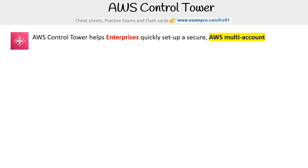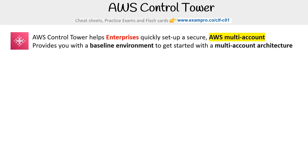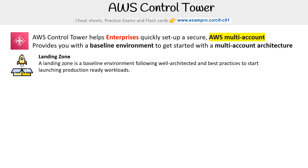AWS Control Tower helps enterprises quickly set up a secure AWS multi-account environment. It provides you with a baseline environment to get started with a multi-account architecture, and it does this a few different ways. The first thing is it provides you a landing zone — a baseline environment following well-architected best practices to start launching production-ready workloads.